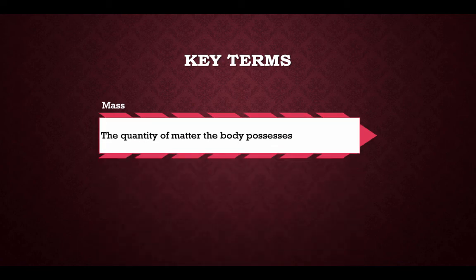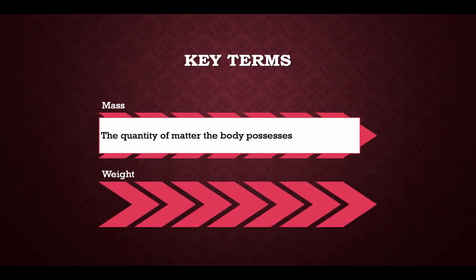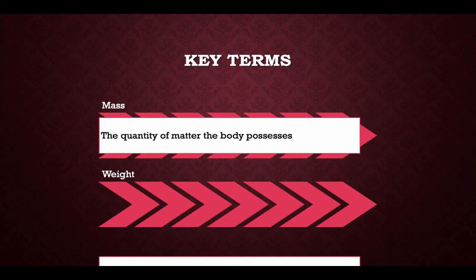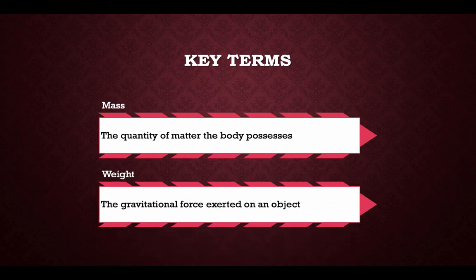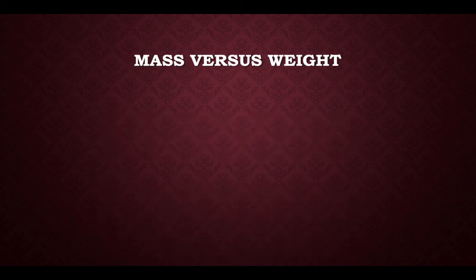Key terms. Mass: the quantity of matter the body possesses. Weight: the gravitational force exerted on an object.